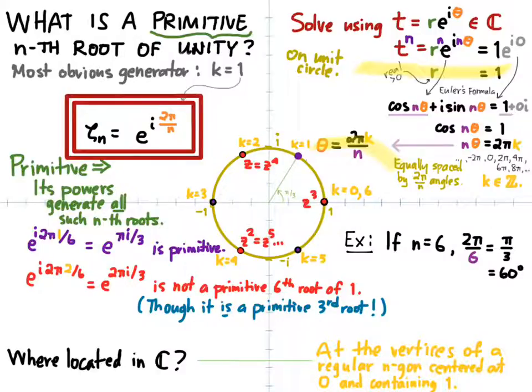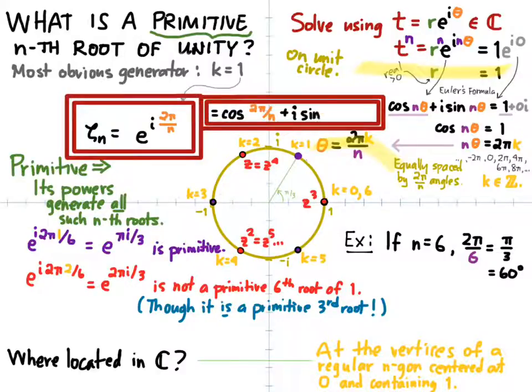And using Euler's formula, we can write that out as the cosine of 2 pi over n plus i times the sine of 2 pi over n. And looking on the complex plane, that's the complex number that makes an angle of 2 pi over n with the positive x-axis on the unit circle.